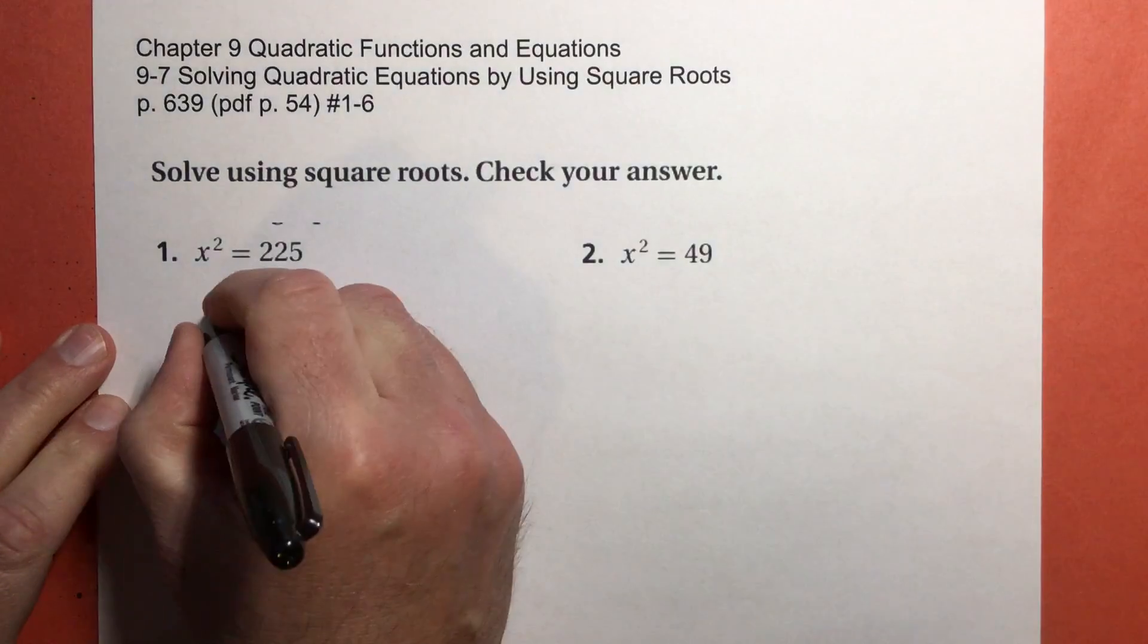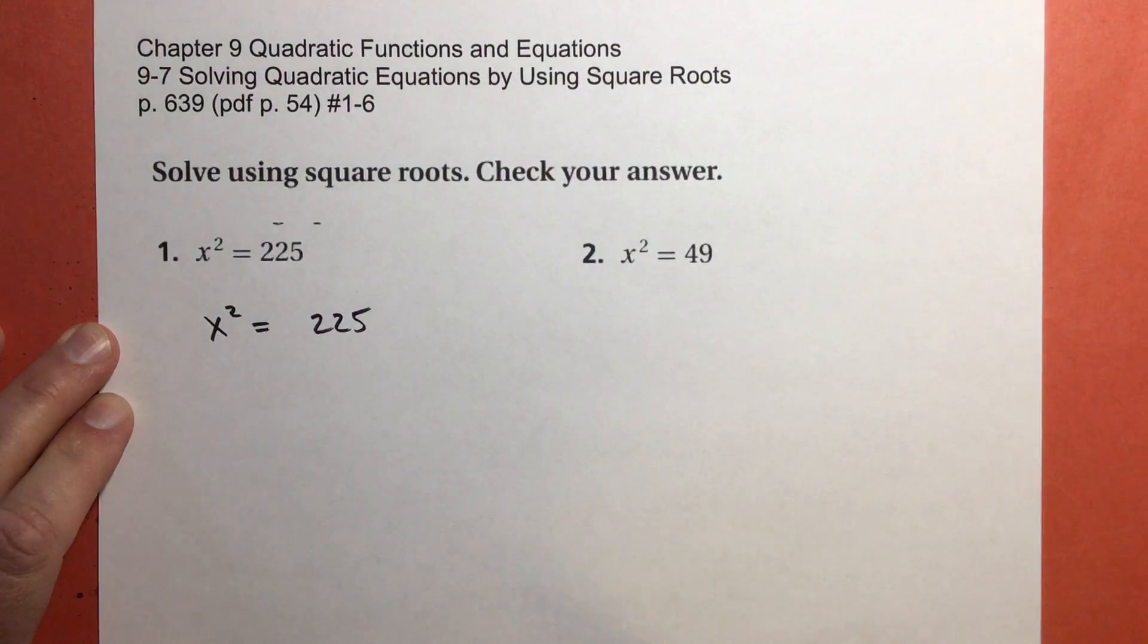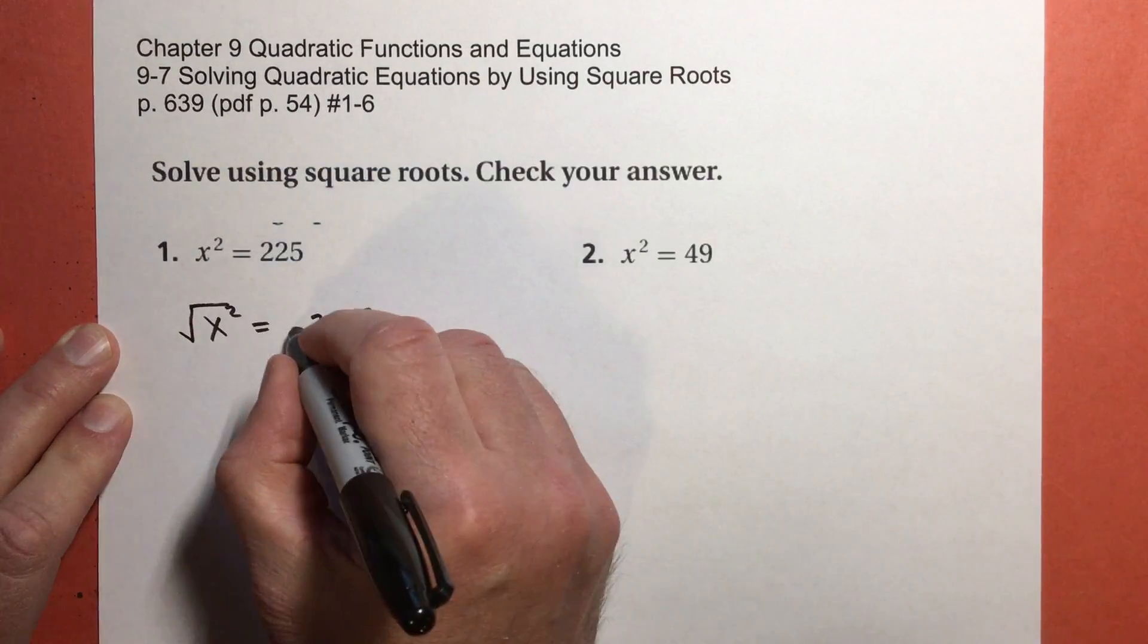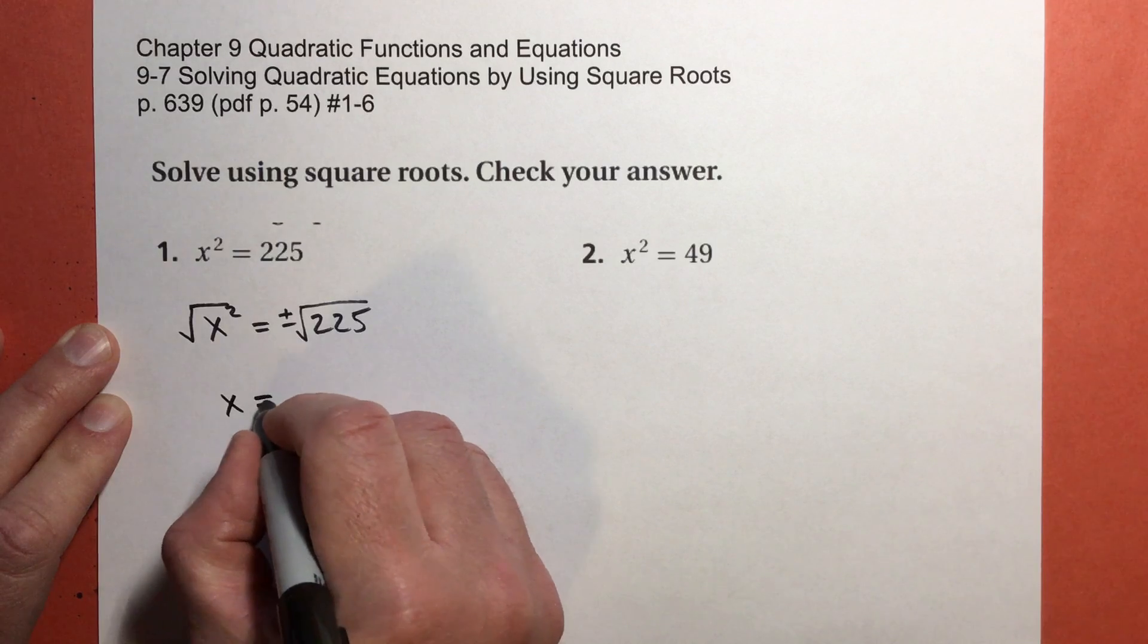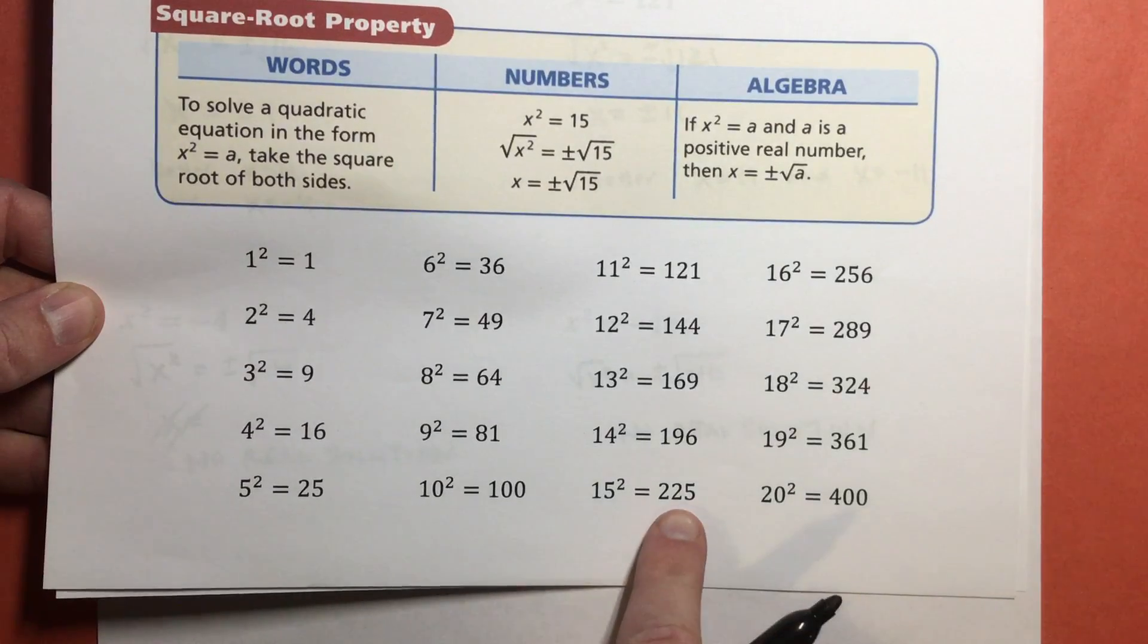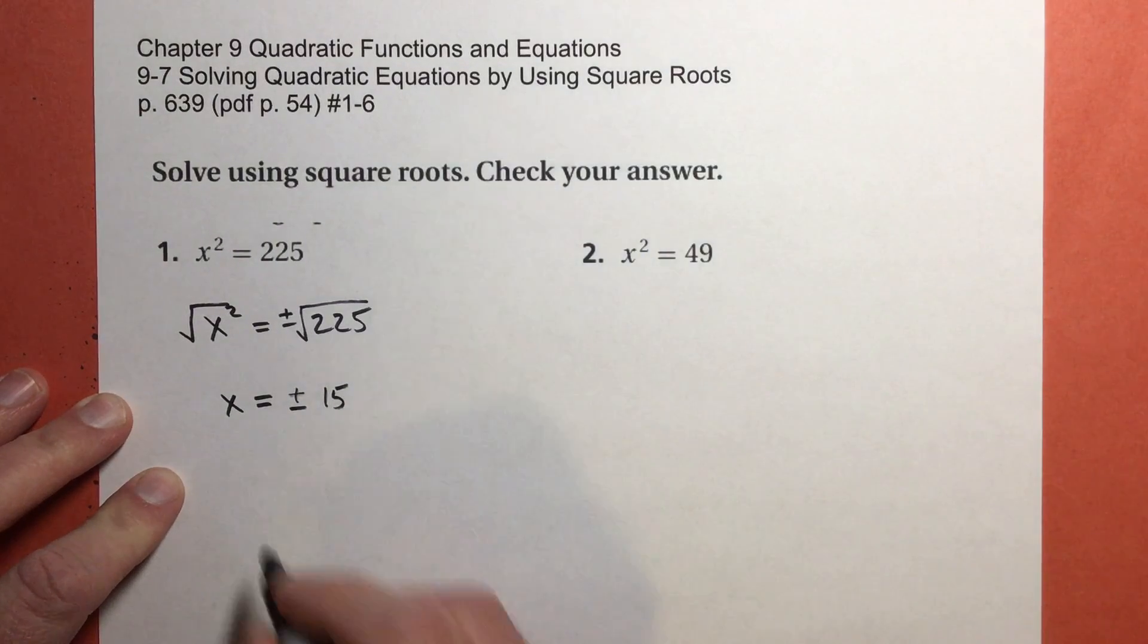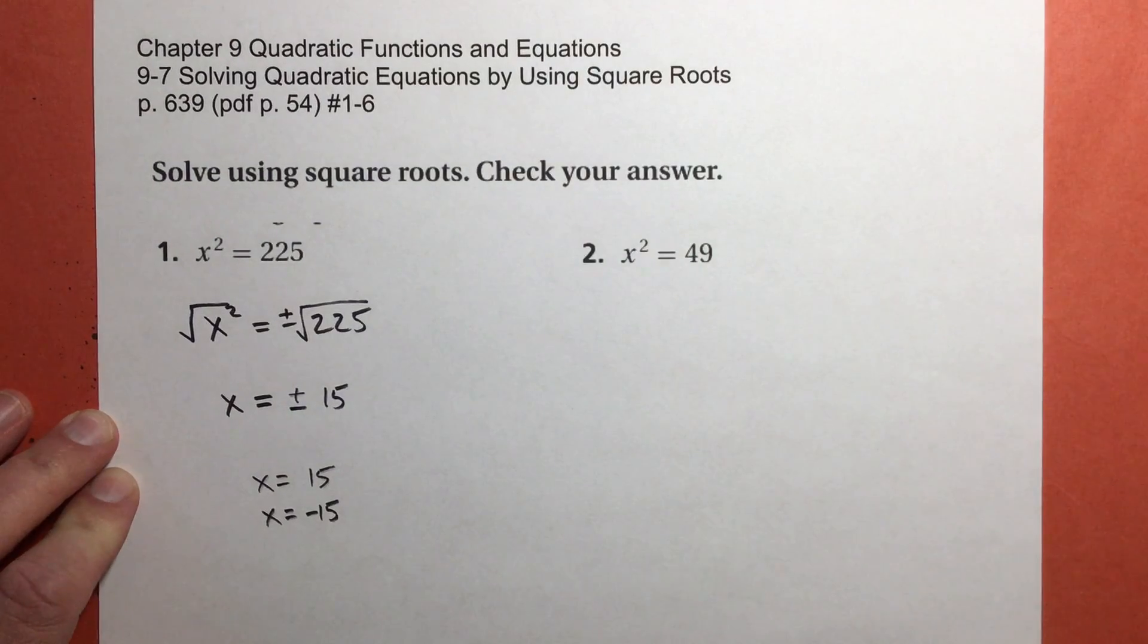Let's look at problem number 1. I have x² = 225. I don't have to work backwards or do anything silly with it. I'm going to take the square root, take the square root. Don't forget I get 2 solutions. And I get x equals... I know what it is because I've done it a lot, and you will too. I forgot that I need to show you this. Because 15² = 225. So this is positive 15 and negative 15. And if you want to write x = 15, x = -15, that's actually better.